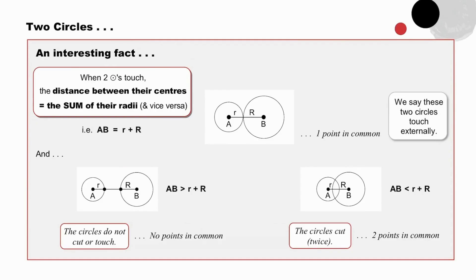This is the line a tangent to the circle. Pause to study this slide, where we consider an interesting fact. Two circles touching each other, we say externally. We note that the distance between their centers AB is equal to the sum of their radii, and we write it down like that.